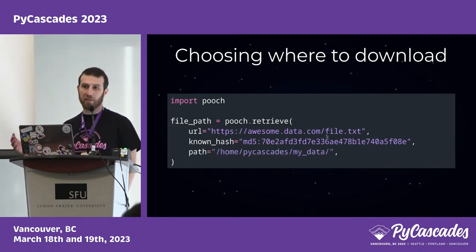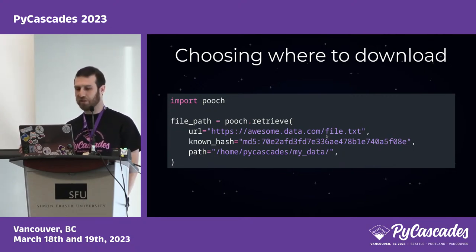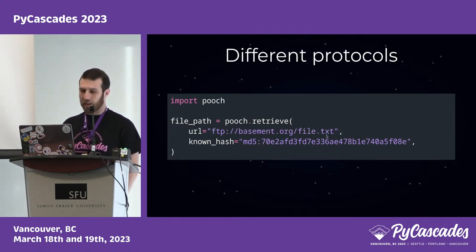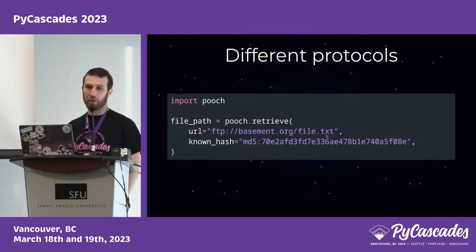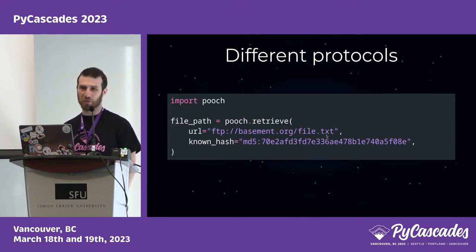You can tweak things — for example, if you want to control where the file will be downloaded, you can just pass a custom path. And you can also use different protocols. So if you have an FTP server in your basement, you can totally use Pooch to download files from it.